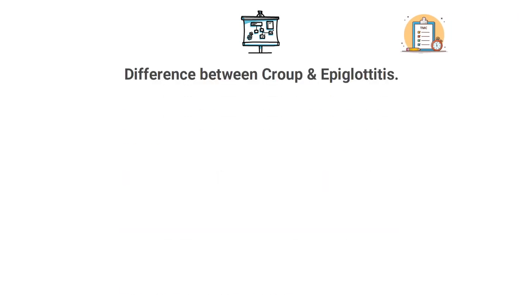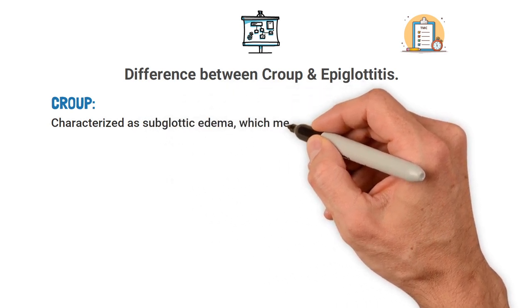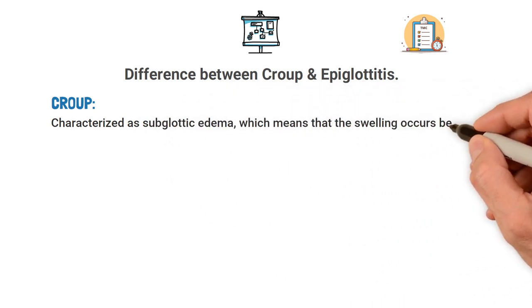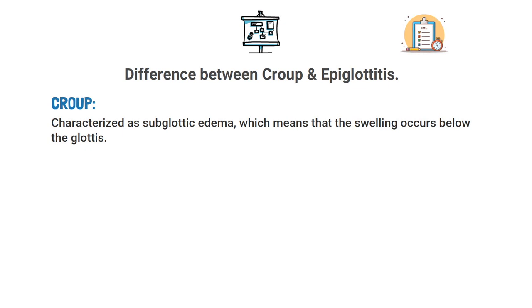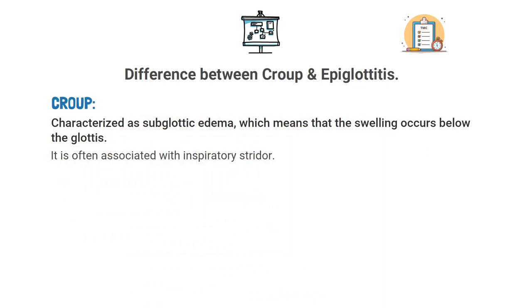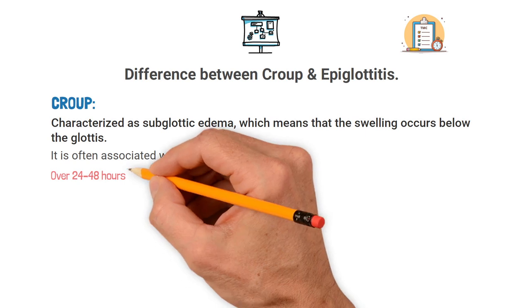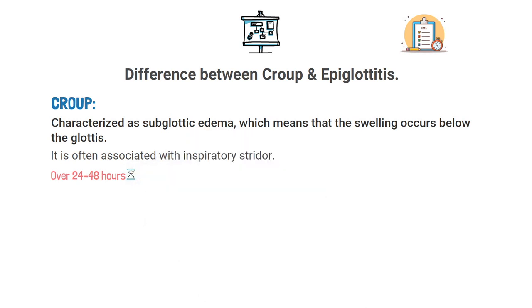For the TMC exam, you absolutely must be able to recognize the difference between croup and epiglottitis. Croup, also known as laryngotracheobronchitis, is characterized by subglottic edema, meaning the swelling occurs below the glottis. It is often associated with inspiratory stridor, and the onset occurs more slowly — usually over 24 to 48 hours. One thing to look for when croup is present is the steeple sign on a lateral neck x-ray.